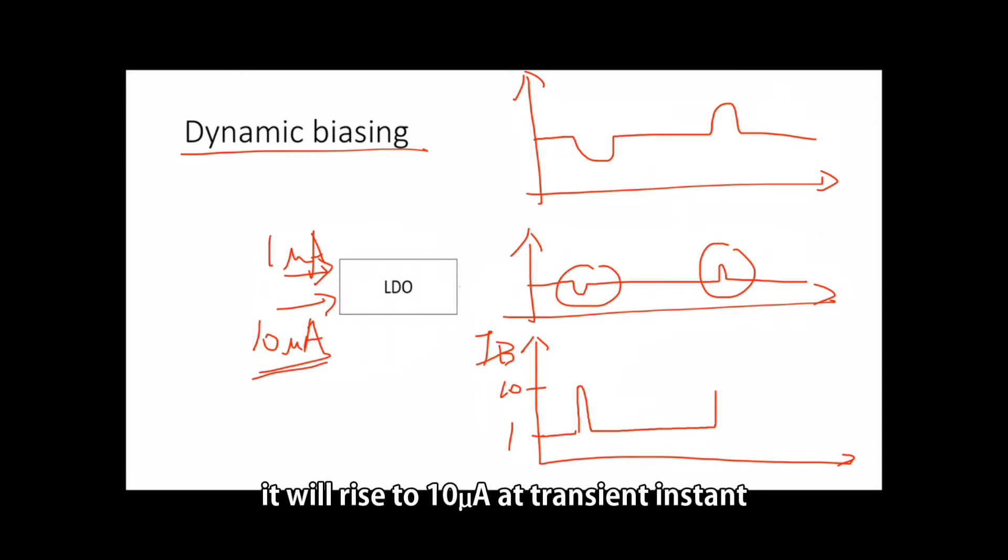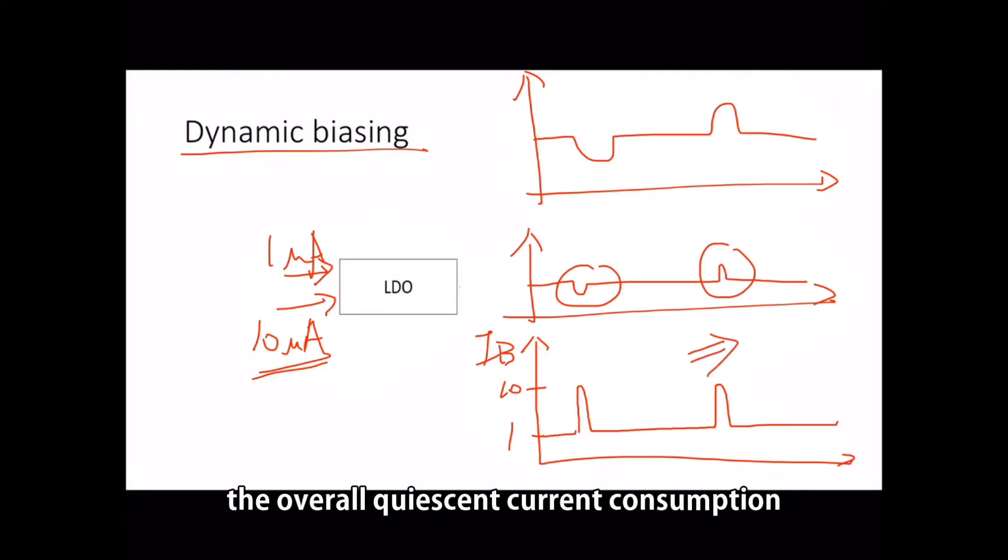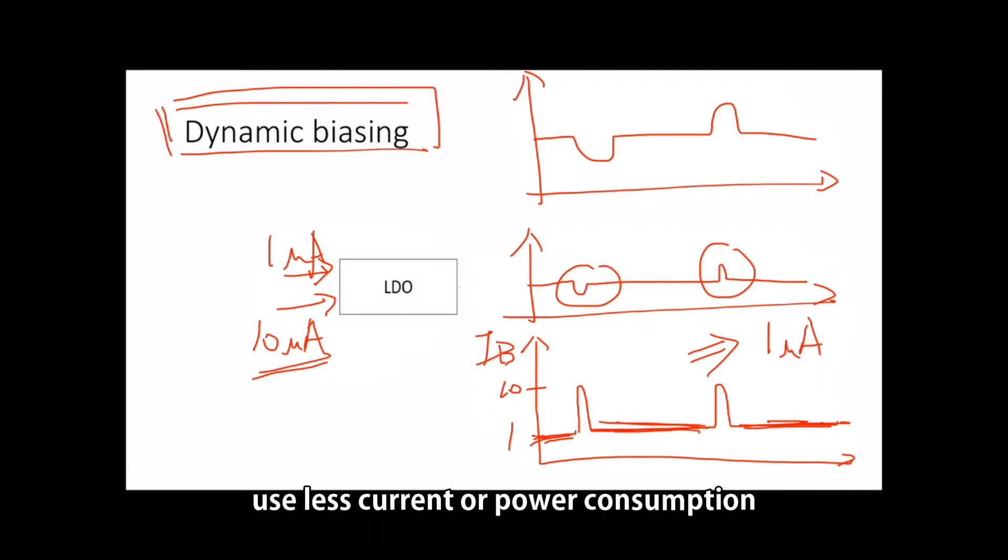The overall quiescent current consumption should be 1 microampere because most of the time, the biasing current is 1 microampere. And this technique could use less current or power consumption to improve the performance of LDO.